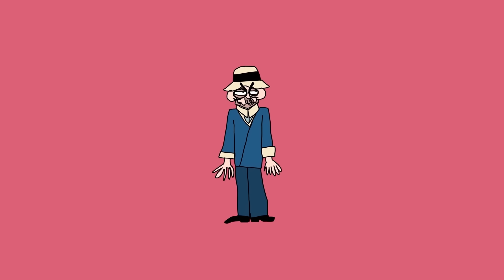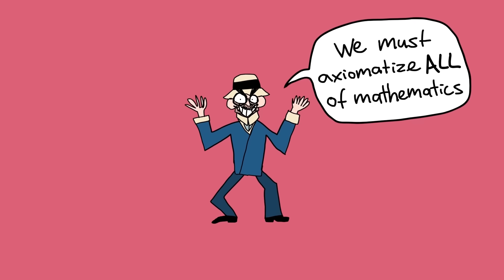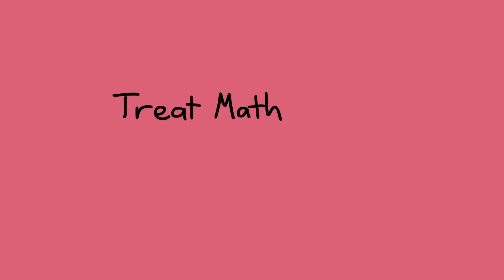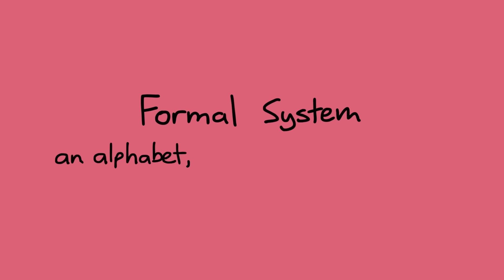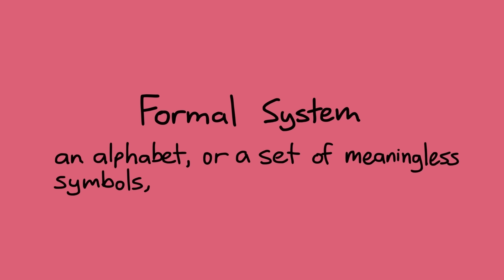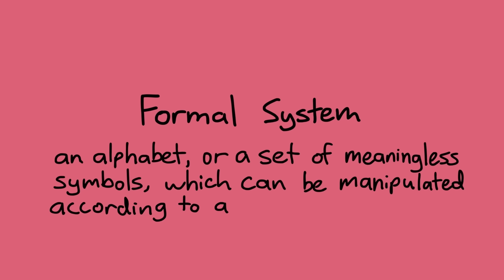He proposed a crazily ambitious program to axiomatize all of mathematics. This sentence requires some explaining. See, Hilbert thought that if we treat math as nothing more than a formal system, there could be no more disagreements about what was and wasn't allowed. So what is a formal system? Well, it's an alphabet or a set of meaningless symbols which can be manipulated according to a fixed set of rules.